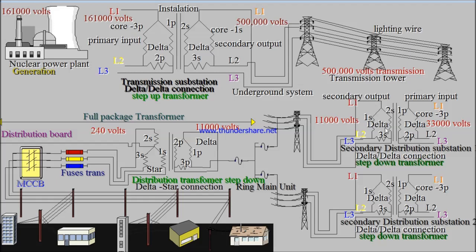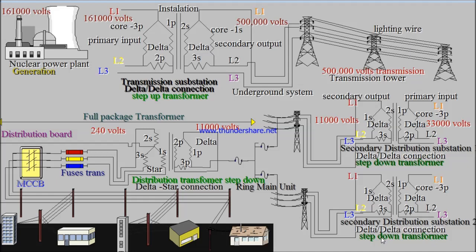Let's have a look at this transformer, which is the secondary distribution substation. It also has a delta connection — the primary core is delta and the secondary core is delta. It's a step-down transformer. We receive around 300kV and step it down to 11kV, because we are now in town and the transmission distance is no longer long. So we can now have this 11kV.